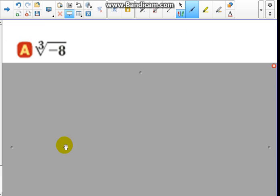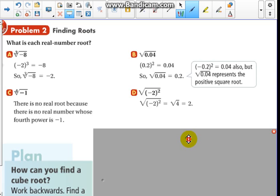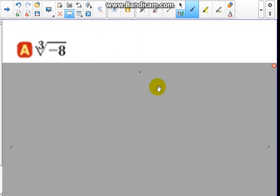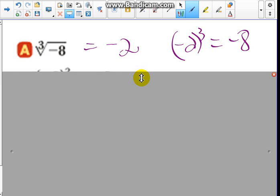Problem two is broken down into four problems. The instructions were what is each real number root. The first one, the real number root, we've got an odd index and a negative number, so we know it's going to be negative two, one answer, because negative two cubed is equal to negative eight. We're just reversing the process to find it.